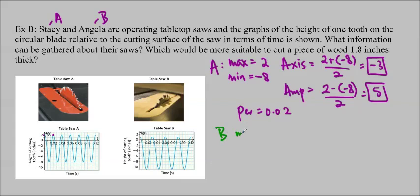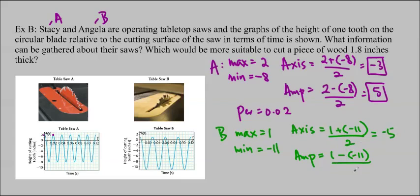For Angela's, her max is 1, and her minimum is negative 11. So that tells us that her axis is 1 plus negative 11 over 2, which gives us negative 5. And her amplitude is 1 minus negative 11. That gives us 12 over 2, which is 6. And as for the period, we're going to go from the tops again. We start here at 0, and it goes to halfway between 0.02 and 0.04. So that gives us about 0.03. So the period equals 0.03 seconds. You can write the units in there. This is inches, inches, inches, and inches.